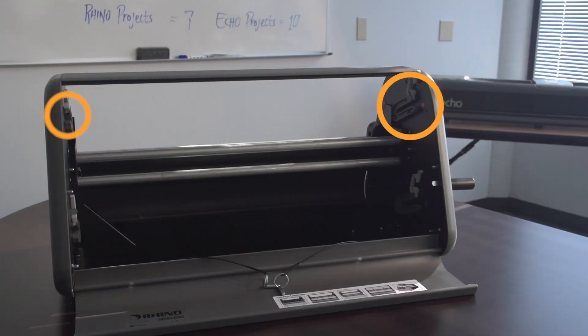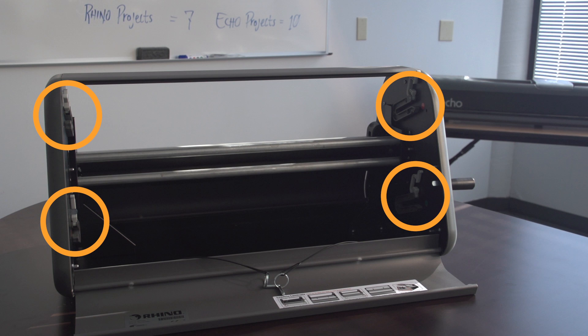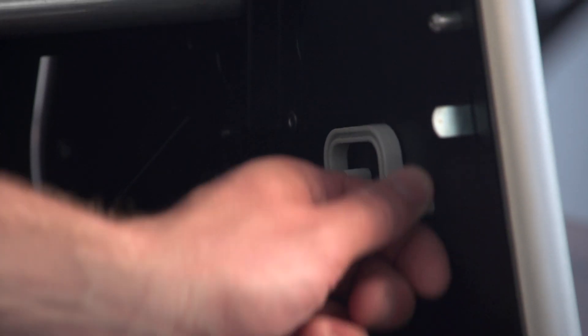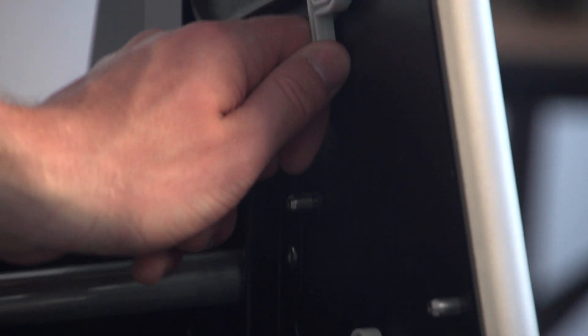Inside Rhino there are gray brackets that hold the rolls of laminate in place. Each bracket has a latch that needs to be opened in order to load supply. Pull the tail of each bracket to rotate the latch into the open position.